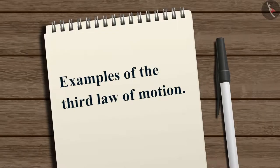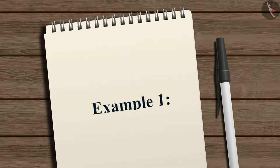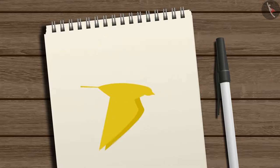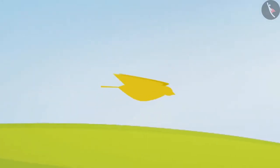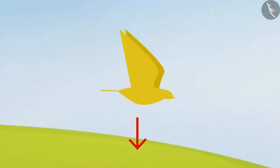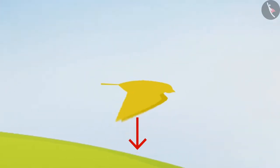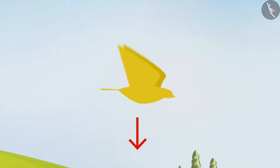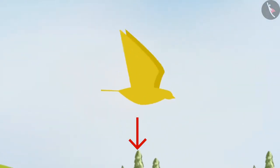Let us now look at two different examples to understand the third law of motion better. Consider the case of a bird flying by flapping its wings. When a bird flaps its wings downwards trying to lift off, it creates a force that pushes the air downwards, which results in an equal and opposite force that pushes the bird upward and helps it to fly into the sky.